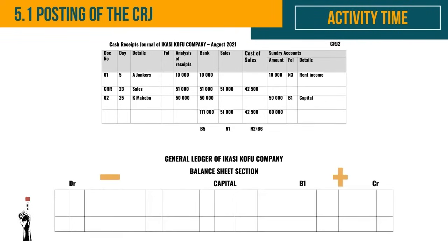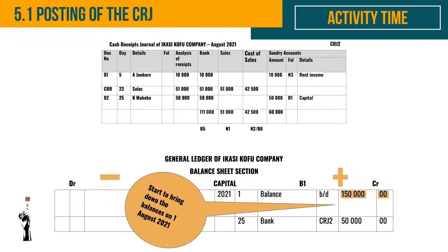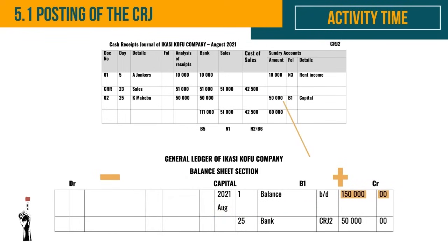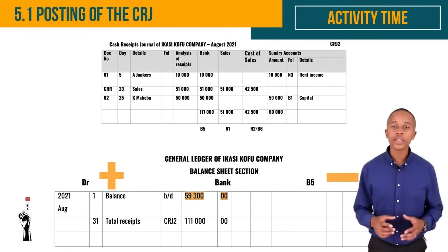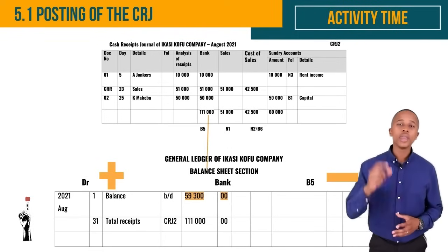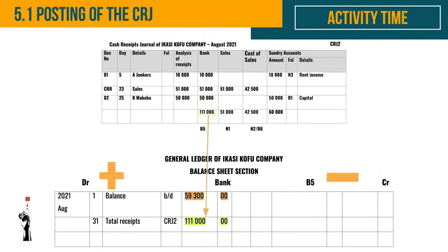Where do we start? First, bring down the balances on 1 August 2021. Remember DALEK: capital will increase on the credit side. Apply your principles — remember the two golden rules: column totals at the end of the month, and sundry accounts on the day the transaction took place. The next account is bank — there are no drawings or assets to post before it. Bank is an asset and increases on the debit side of the T-account. Bring down the balance: the R111,000 is all the money received in the month of August.